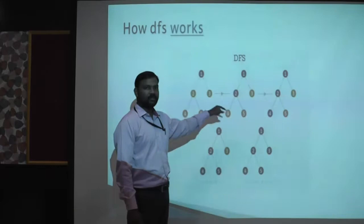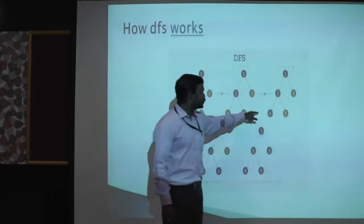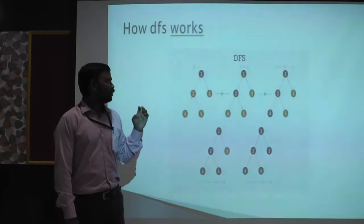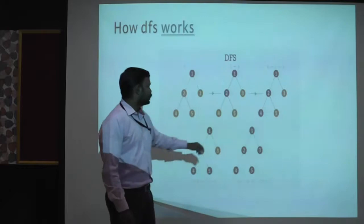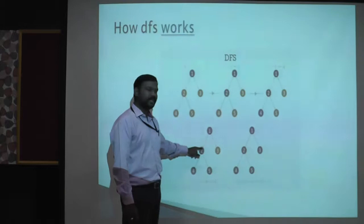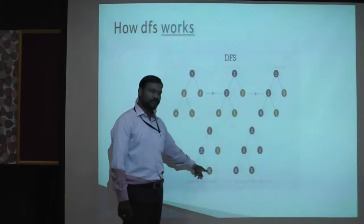Once it reaches node four, there are no more further nodes. So it stops the iteration and retracts to the previous node. This process is called backtracking. Backtracking is the process of going to your previous nodes and searching for other optimal solutions. So here, once it reaches four, it goes back to node two, and again it looks for any other options from two. There is another unvisited node called five, so it goes to five.